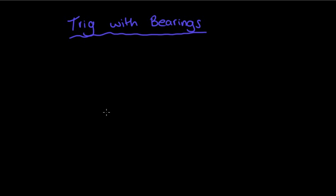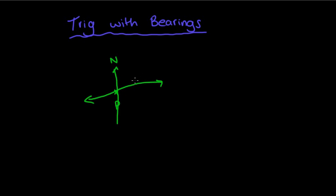Whenever you're given any type of question, we need to have a starting point. I'm going to put the starting point as P. Whenever you have a starting point, you need to make sure that on that starting point you draw in your north, east, south, west bearings — they're ultra important. So say for example I'm traveling from P to A on a bearing of 40 degrees.